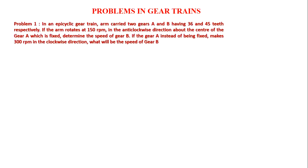Hello viewers. In this class we will look at some problems in gear trains. Let us go with the first problem. In an epicyclic gear train, the arm carries two gears A and B having 36 and 45 teeth respectively. If the arm rotates at 150 RPM in the anticlockwise direction about the center of gear A which is fixed, determine the speed of gear B. If gear A instead of being fixed makes 300 RPM in the clockwise direction, what will be the speed of gear B?